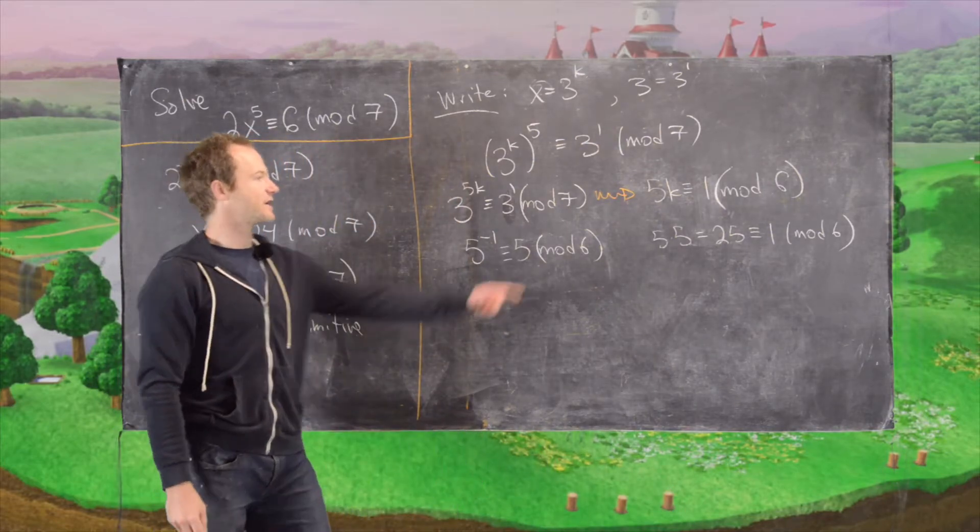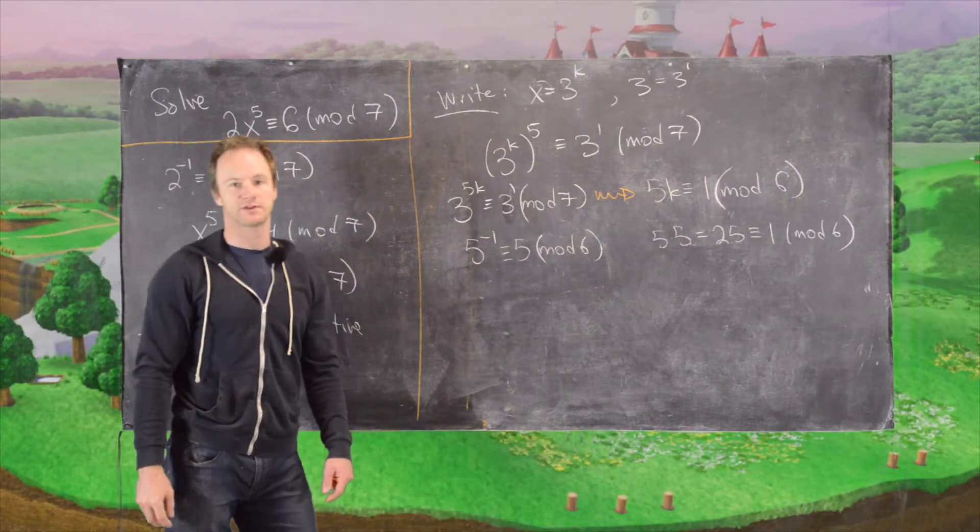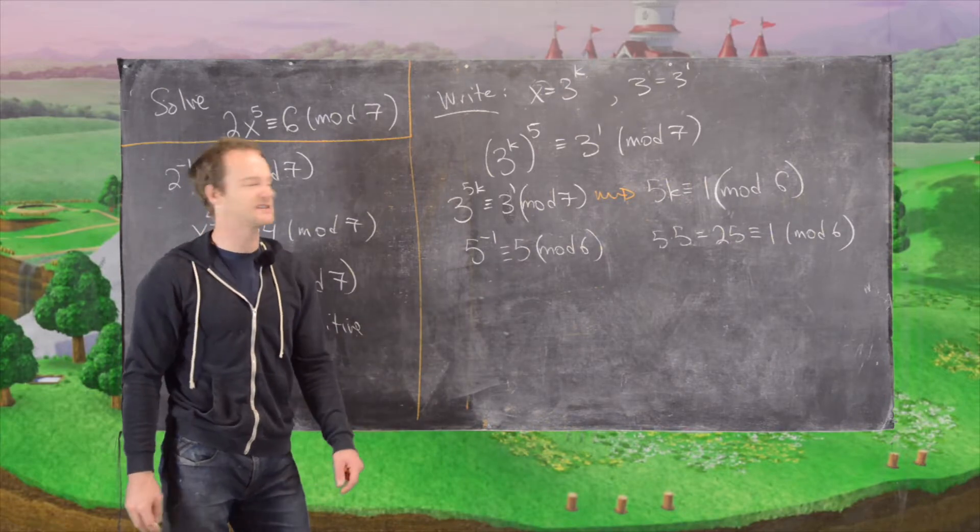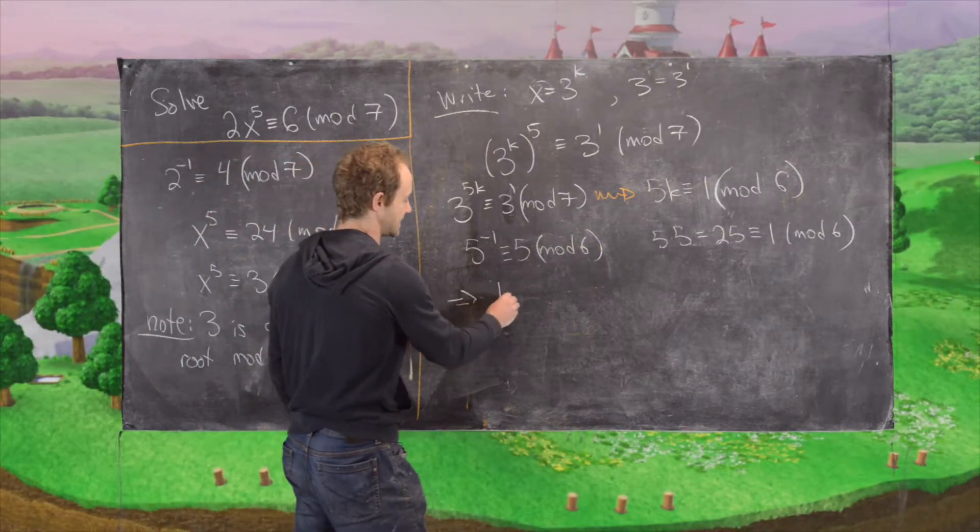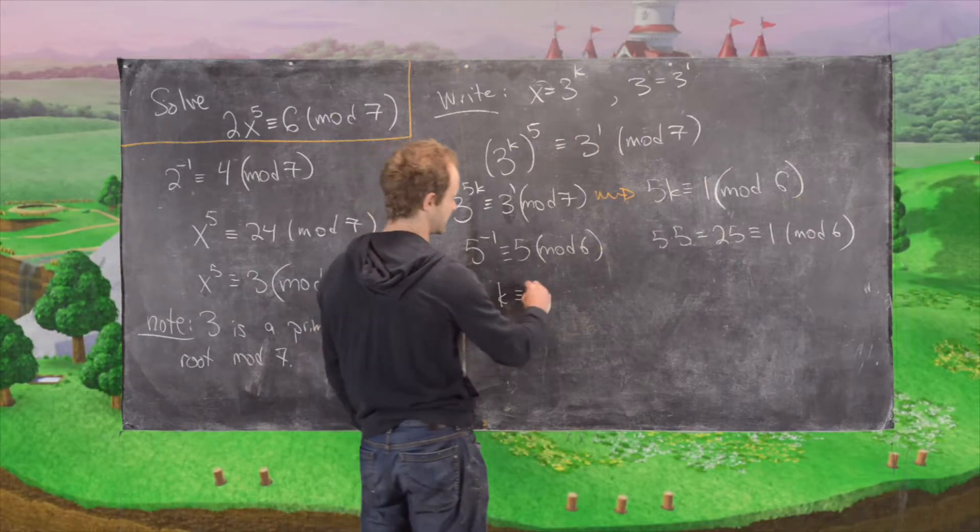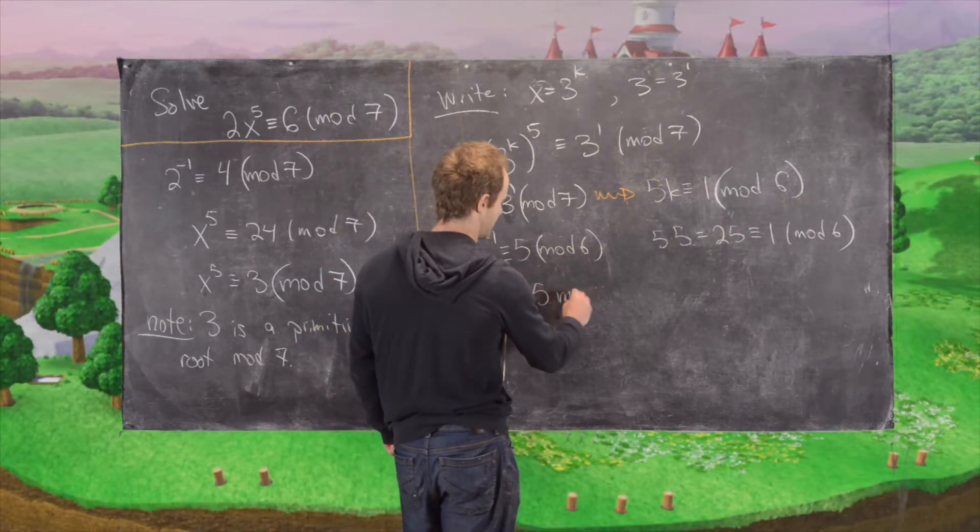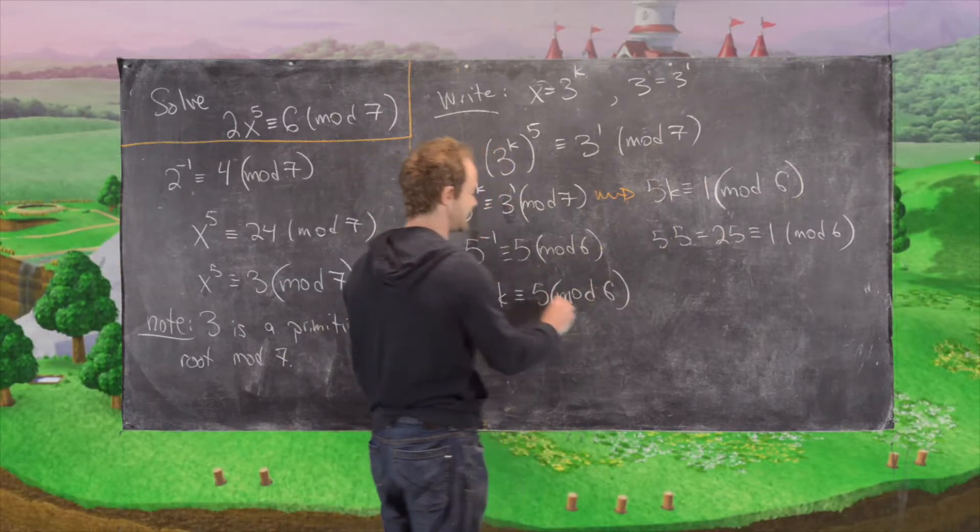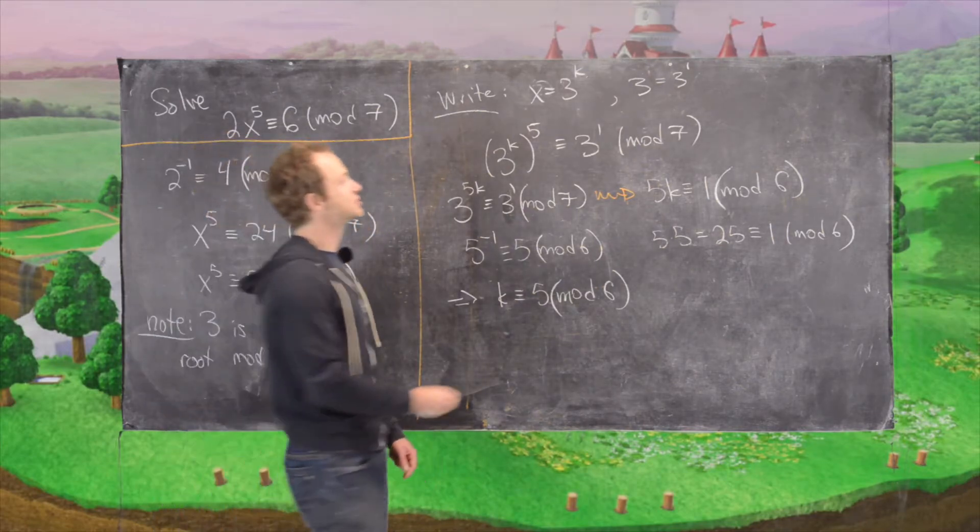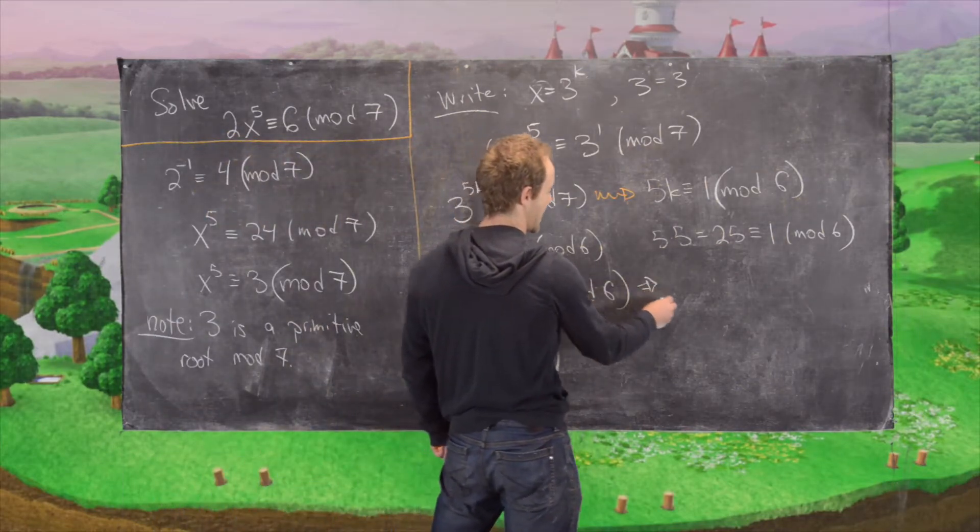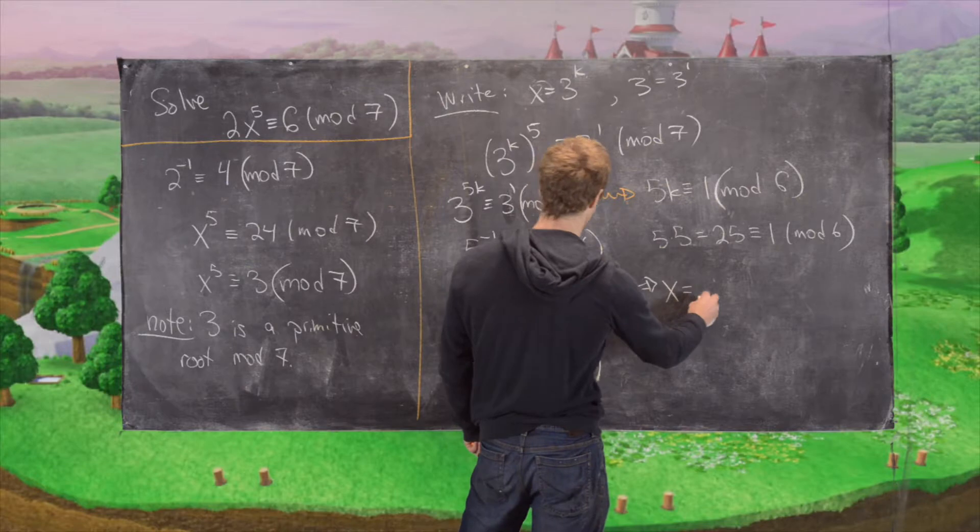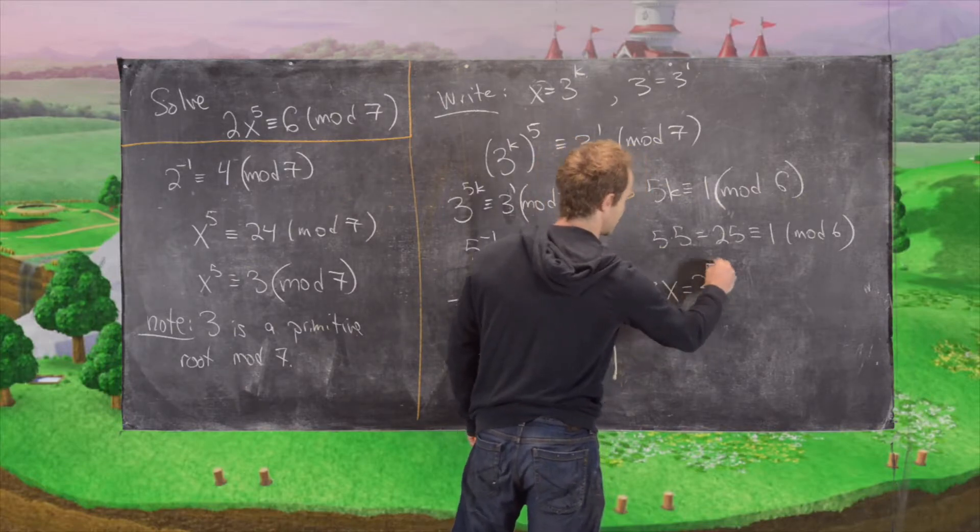So the next thing we want to do is take this congruence and multiply both sides by 5 inverse, which happens to be 5. And that tells us the following. That tells us that k is congruent to 5 mod 6, which again tells us that x is equal to 3 to the 5th power.